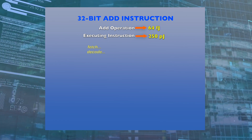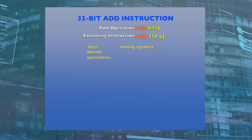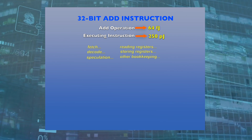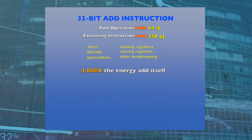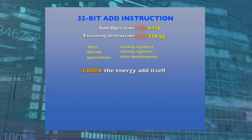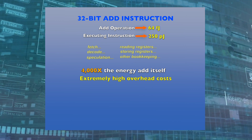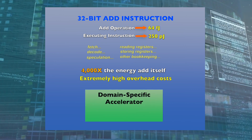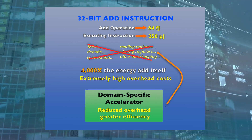Instruction fetch, decode, all of the speculation that goes on, reading registers, storing registers — all of that bookkeeping takes 4,000 times as much energy as the payload of actually doing the add. And it's because that overhead is so high that we're able to get great efficiency out of building domain-specific engines, because we can put just that adder down and not burden it with all that overhead of having to fetch and decode instructions.